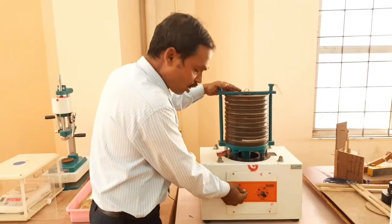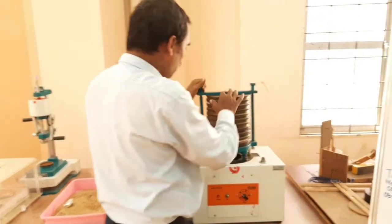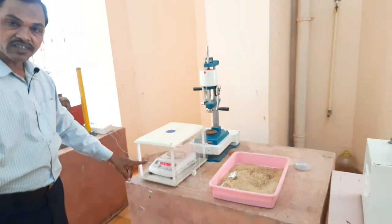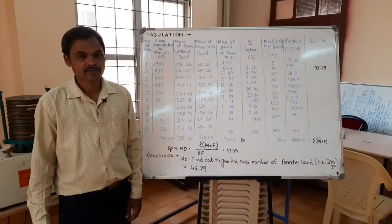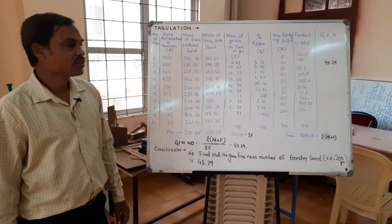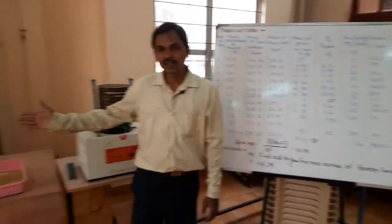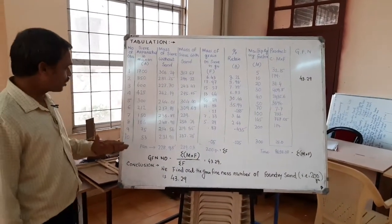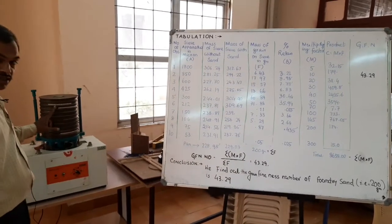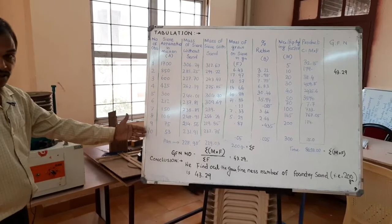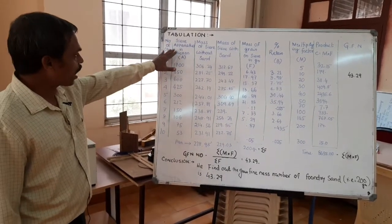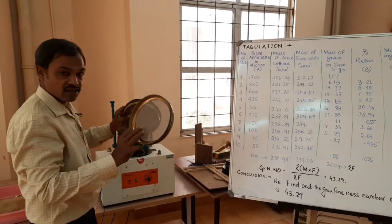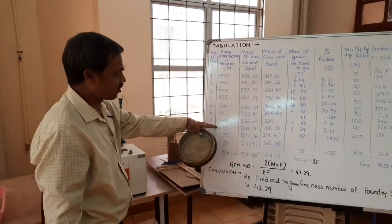After that, we go to the tabulation part. In this tabulation, we record 10 sieves — so observations total 10. The sieve aperture is given in microns: these are the individual sieve grain sizes, all in microns. Clear about it.